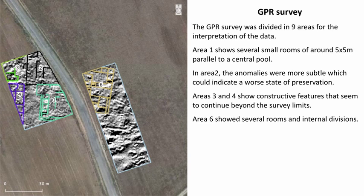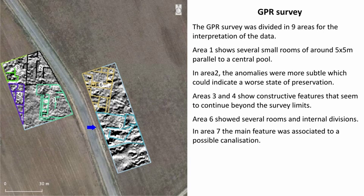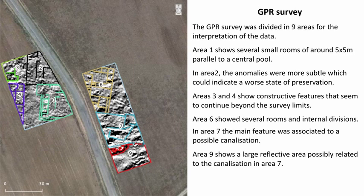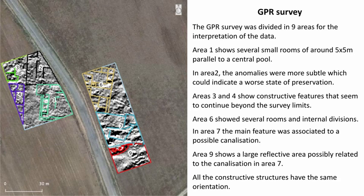Area 6 showed several rooms and internal divisions. In Area 7, the main feature was associated to a possible canalization. Area 9 shows a large reflective area possibly related to the canalization in Area 7. All the constructive structures have the same orientation.